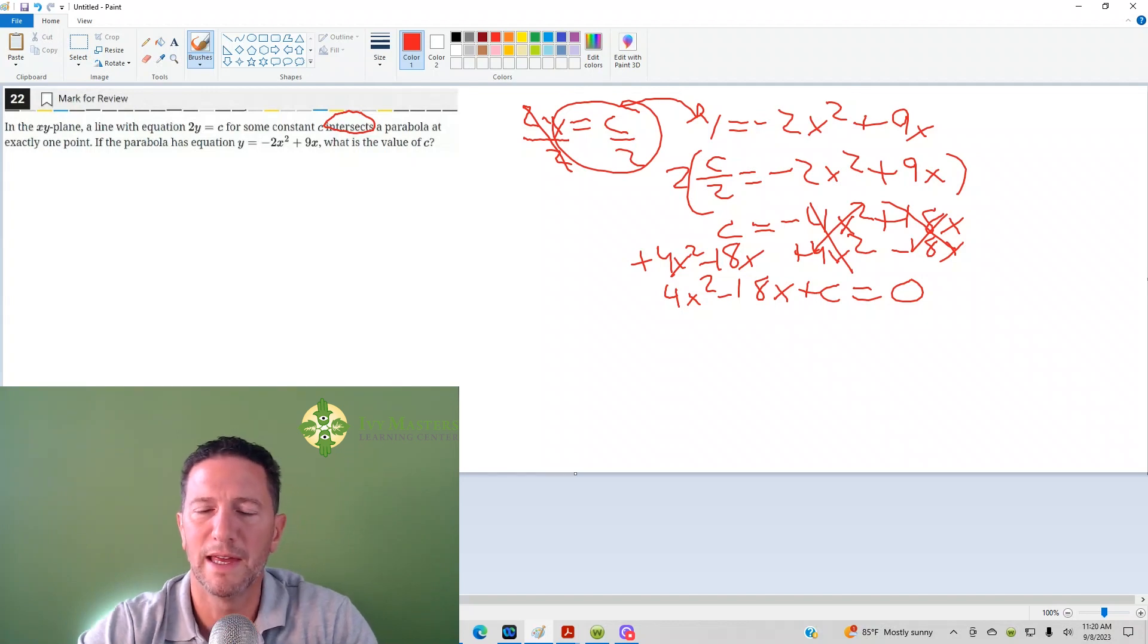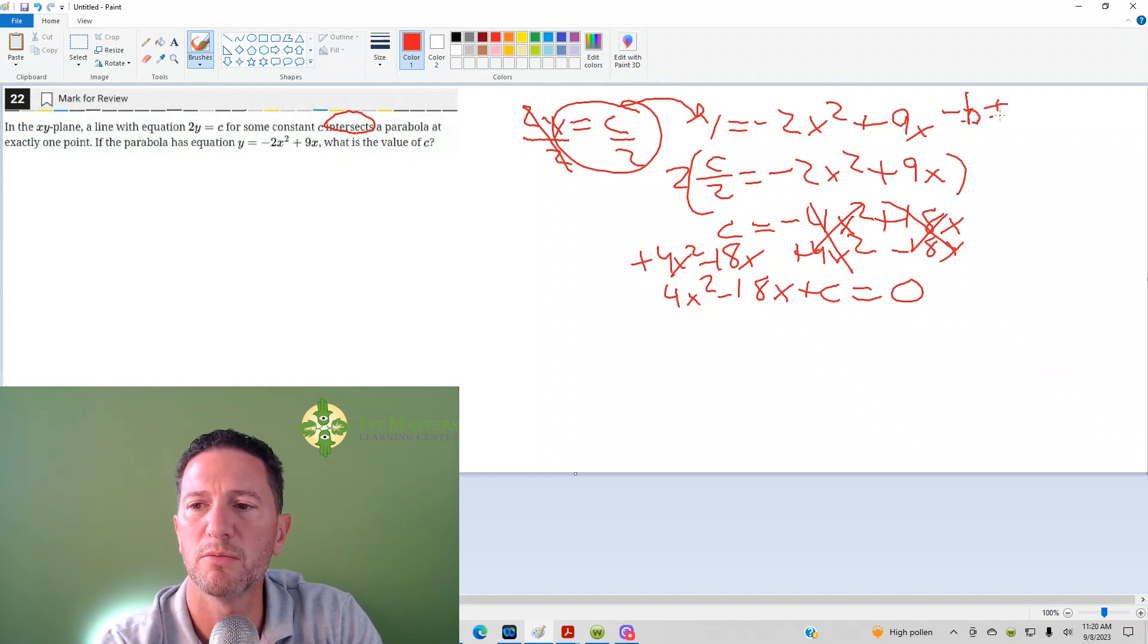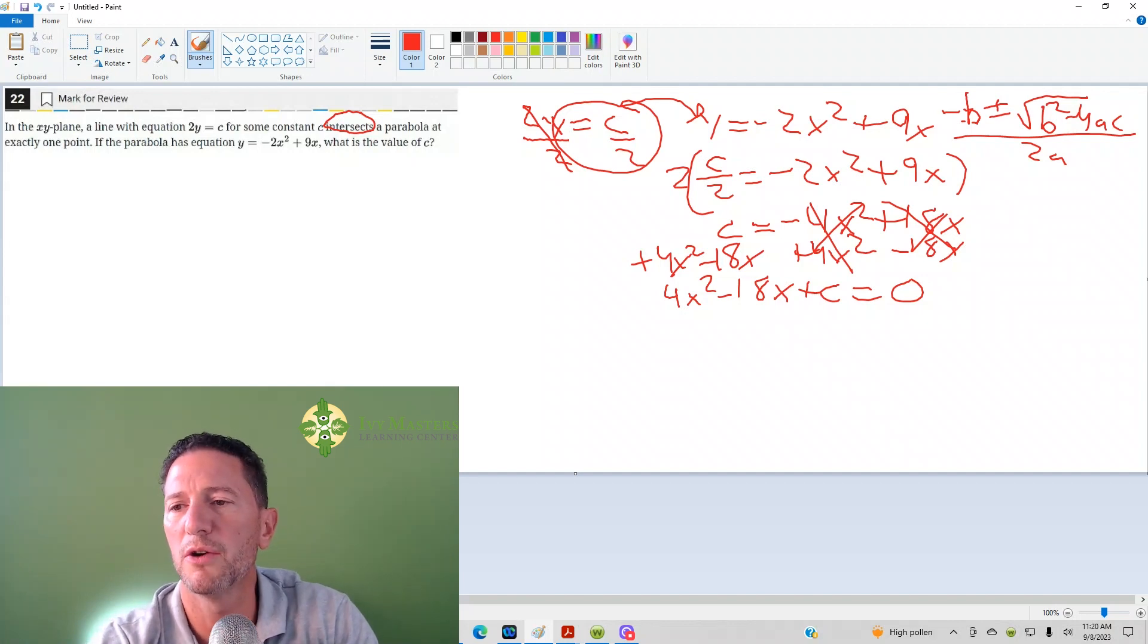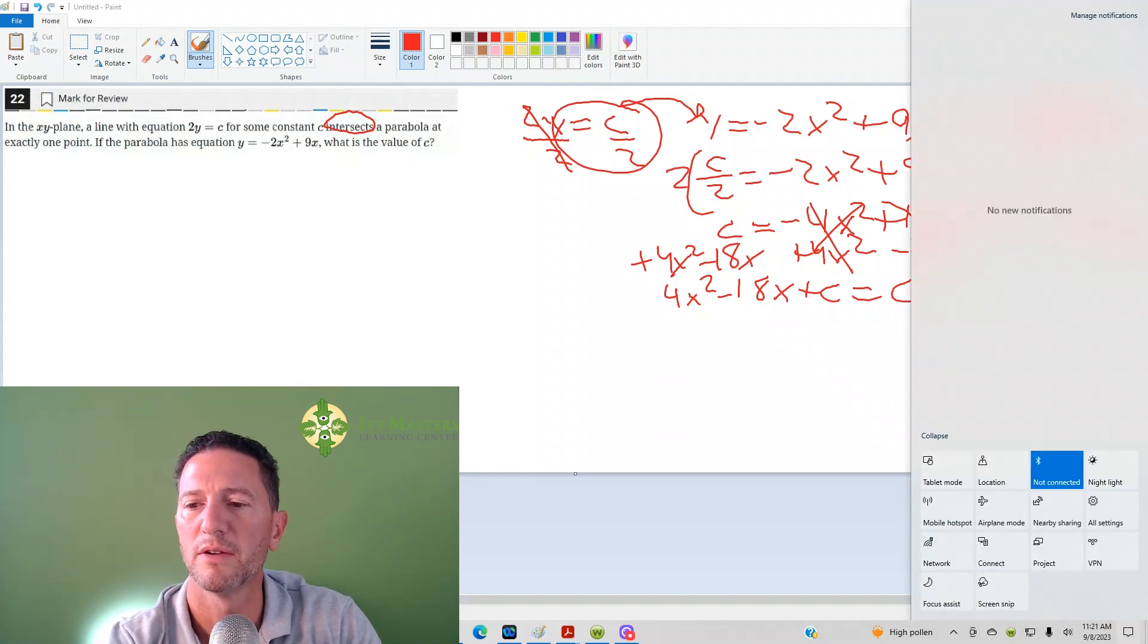We've got our quadratic. One thing you've got to know is the quadratic formula: negative B plus or minus the square root of B squared minus 4AC, whole thing over 2A. What I want you to notice is that B squared minus 4AC is under the root, and you cannot take the square root of a negative. So if B squared minus 4AC is less than 0, then you've got no real solutions.